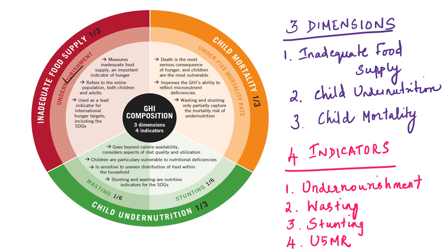The second indicator is wasting, which refers to the percentage of children less than 5 years of age with low weight for height, reflecting acute undernutrition. The third indicator is stunting — children less than 5 years of age with low height for age, reflecting chronic undernutrition. These two components reflect child undernutrition, so the second dimension has two indicators: wasting and stunting. The fourth indicator is under-5 mortality rate, which is the indicator for the third dimension, child mortality.